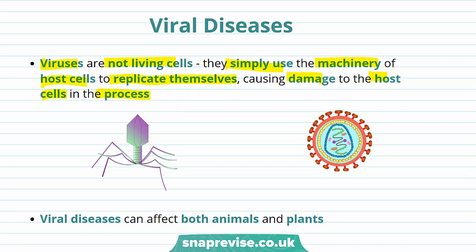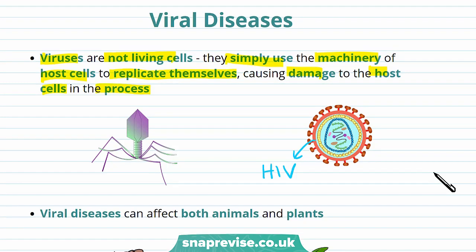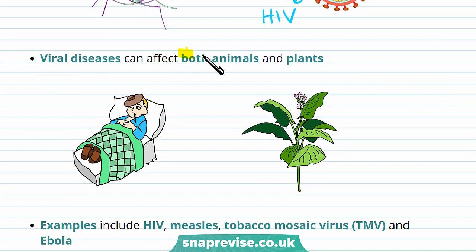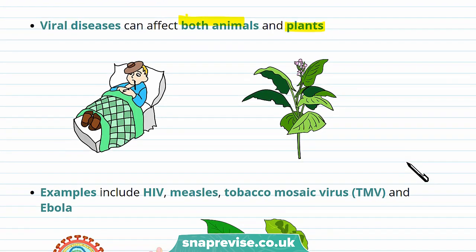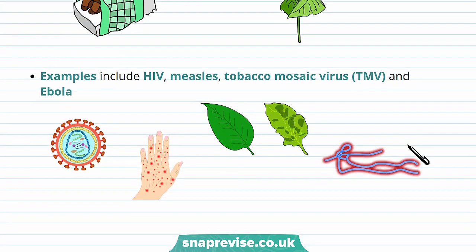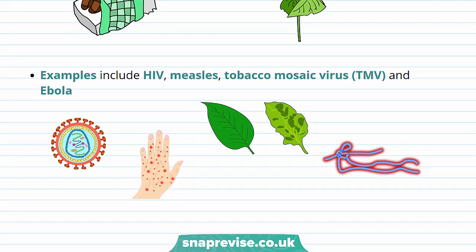In this video we're looking at the different types of viruses and the diseases they cause. Viral diseases can actually affect both animals and plants. Plant disease may have a negative effect on farmers' profits. Some examples of viral diseases include HIV, measles, Tobacco Mosaic Virus, also known as TMV, as well as Ebola.